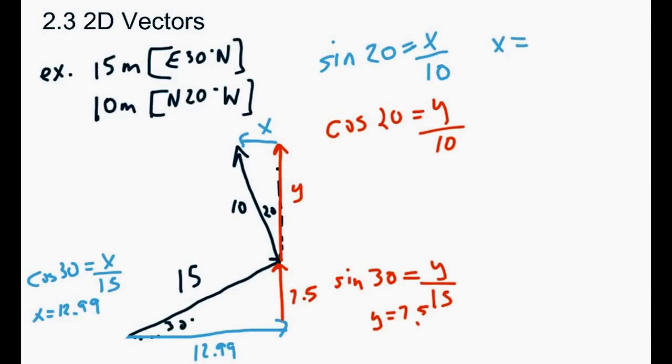So let's solve for each of those. So sine 20 times 10 gives us 3.42. And then cos 20 times 10 gives us 9.40 if we round it off. Okay, so let's write those on our original triangle again. So we have 3.42 on the top and 9.40 on the side. And that's it.